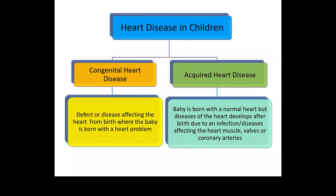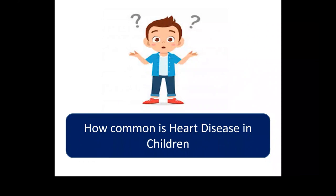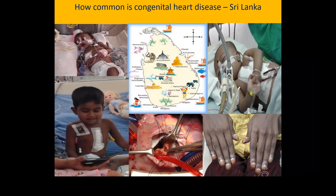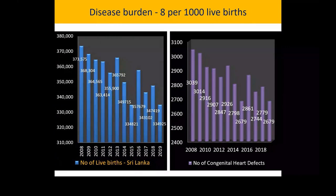How common is heart disease in children? We know coronary artery disease, atherosclerosis, and stents in adults are very common now, even in young adults, but how common is heart disease in children? How common is congenital heart disease in Sri Lanka? It's roughly about eight babies per thousand live births who will be born with congenital heart disease. So if a thousand babies are born, eight of them will have some sort of heart disease.